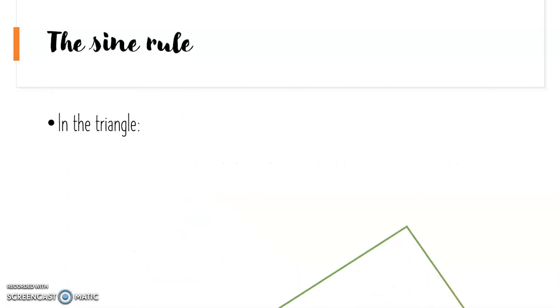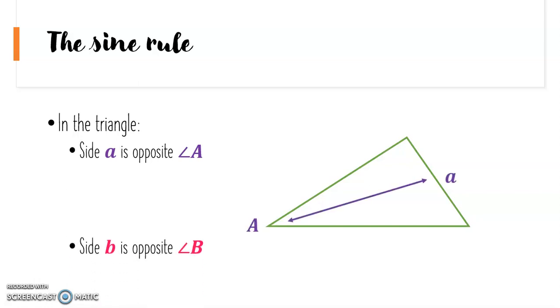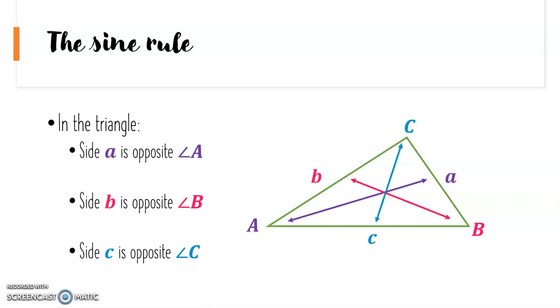In a triangle, side A is opposite angle A, side B is opposite angle B, and side C is opposite angle C.